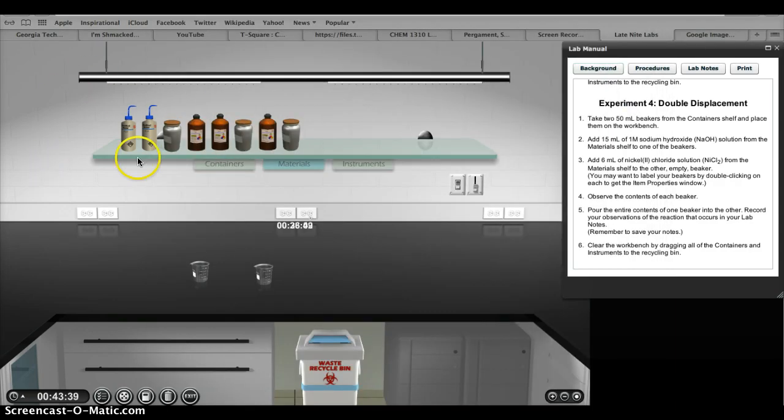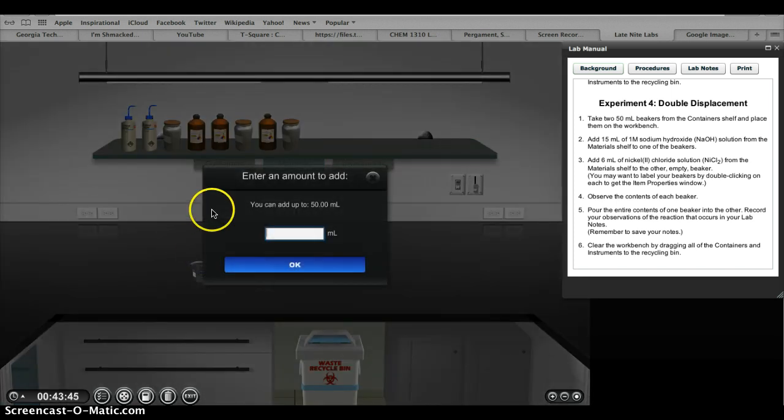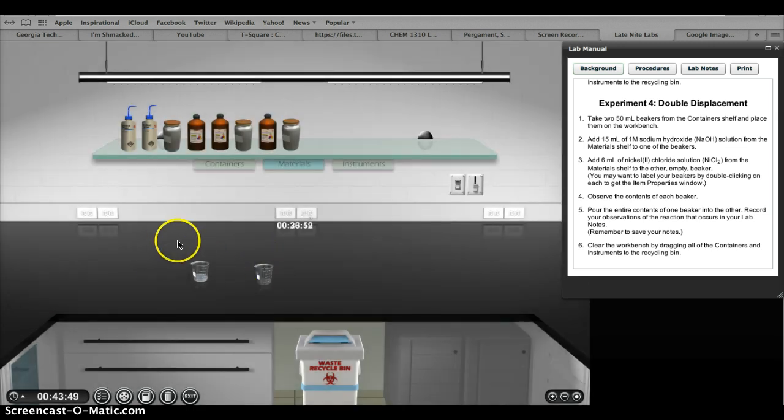Okay, so to perform the reaction, we're first going to add 15 milliliters of sodium hydroxide to a beaker. And it is aqueous, therefore, it is a uniform solution, and it is clear.